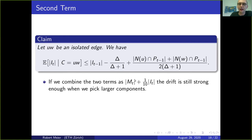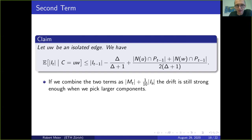When the extra term is small, the first term dominates and we get drift in the right direction even when picking isolated edges. This gives the idea to combine these two terms, with a constant of one tenth chosen so that for large components the drift of the first term still cancels any adverse effect from the second.